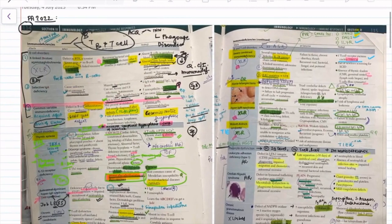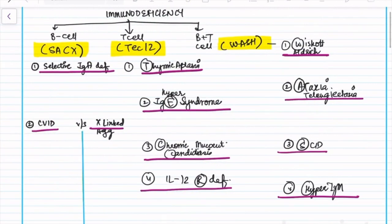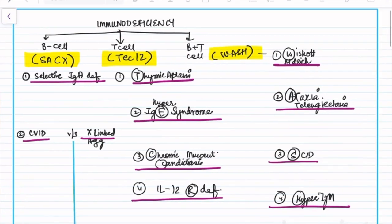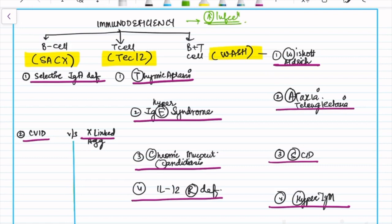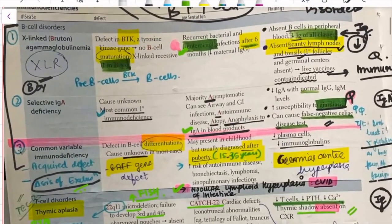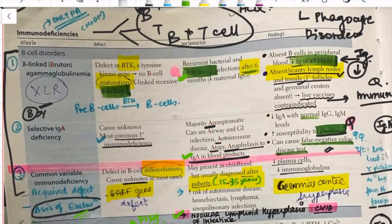What you need to remember is that immunodeficiency disorders are divided into three categories: B cell, T cell, and combined B and T cell. First we'll do dysfunctions of only B cell. B, T, or combined B and T cell will result in immunodeficiency, so the features will be similar — lots of infections — but we need clues in the question to identify the exact disorder. In B cell disorders there are three disorders and the mnemonic is SACS.